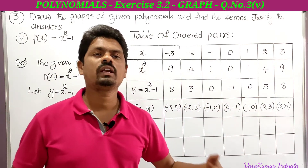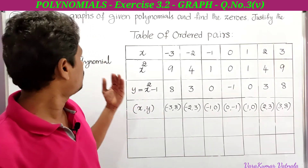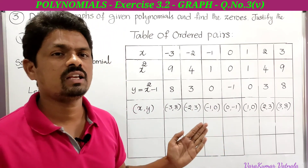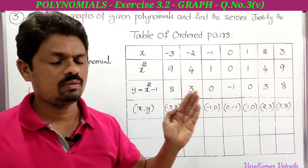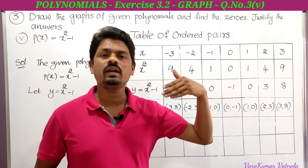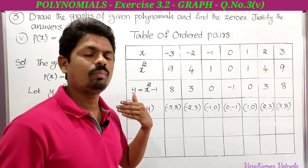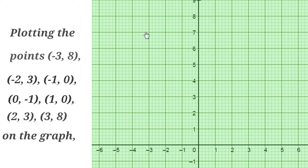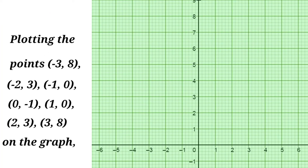We have to observe where the curve intersects the x-axis in order to find the zeros of the quadratic polynomial. Now we have to plot all these ordered pairs on the graph sheet. Before plotting the points, we have to select the scale: on the x-axis, 1 centimeter = 1 unit, and on the y-axis, 1 centimeter = 1 unit. The first point is (−3, 8).